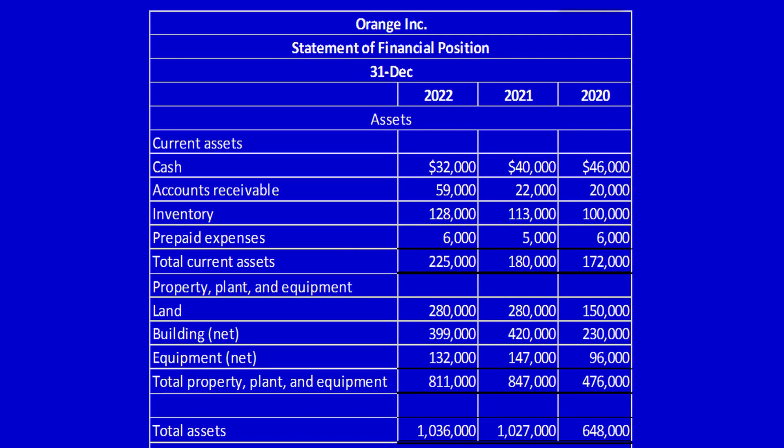Let's use Orange Inc. to demonstrate this ratio. The current assets of Orange Inc. include cash, accounts receivable, inventory, and prepaid expenses. All short-term assets that are either cash, will be turned into cash, or will be used or consumed within the upcoming year.